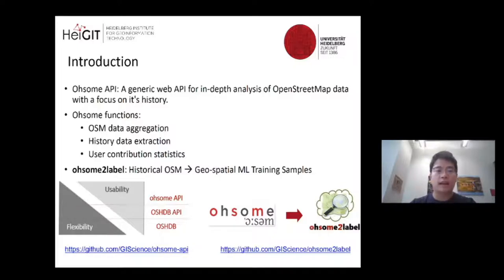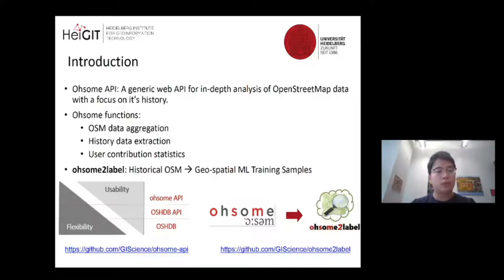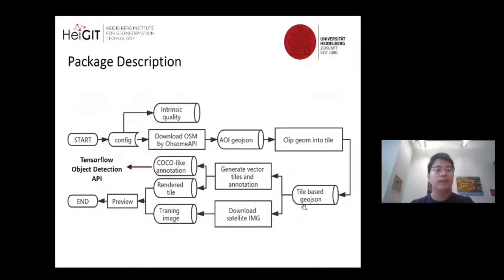Core functions of OHSOME include OSM data aggregation, historical data extraction, and OSM user contribution statistics. Built upon the OHSOME API, our OSM2Label package converts historical OSM features into valid geospatial machine learning training samples. Both projects are open sourced on GitHub. The package offers easy configuration — users can configure their interested OSM features by identifying the OSM key-value pair.